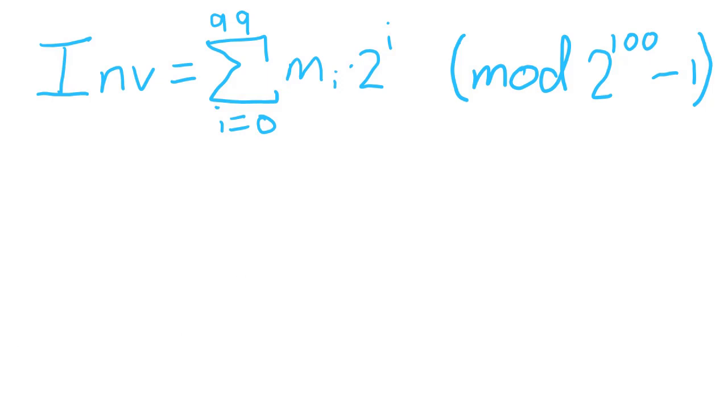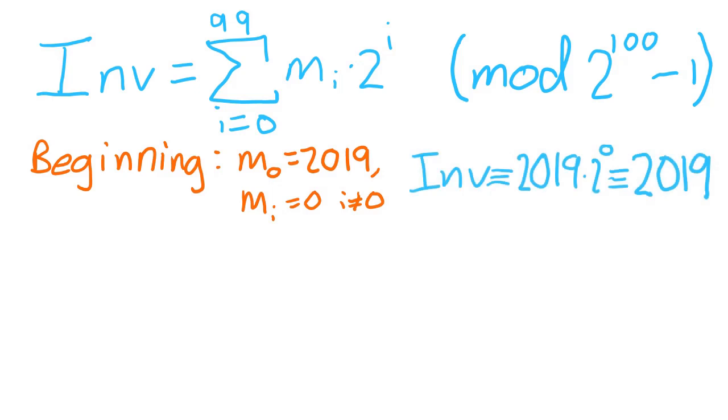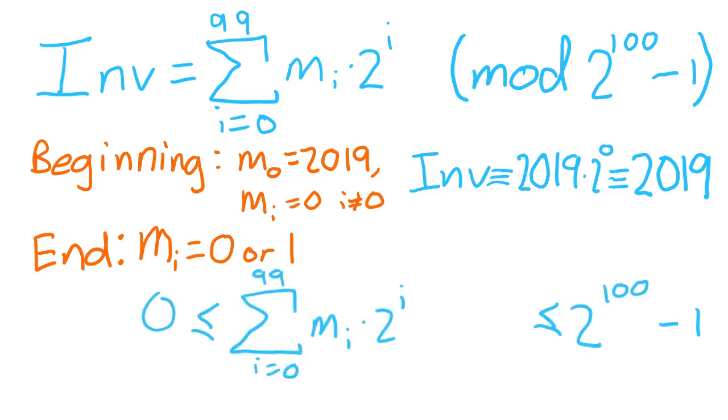Now that we have this invariant, the rest is just finishing the proof with this knowledge. At the beginning of the process, we have that the invariant quantity is 2019 times 2^0, which is 2019. At the very end of the process, we're told nobody can eat or share anymore, meaning that everyone has either 1 mango or 0 mangoes. Note that the final sum is between 0 and 2^100 - 1 since m_i can be at most 1.